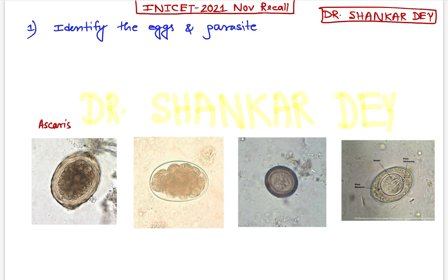Second one, this is the egg of Hookworm. Third one, this is the egg of Taenia Solium. And the fourth one, this is the egg of H. Nana — Hymenolepis Nana. So this is the identification of eggs.